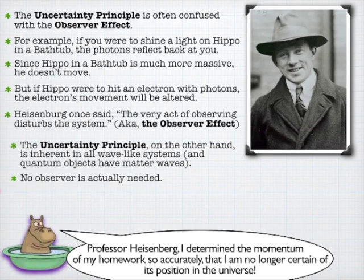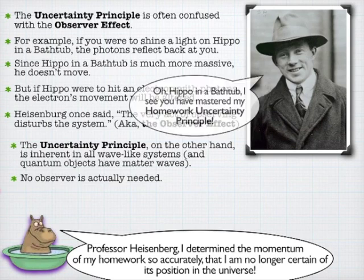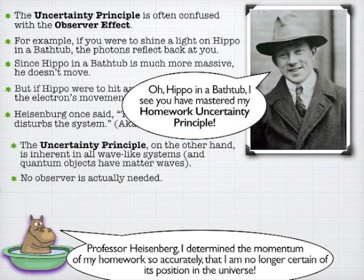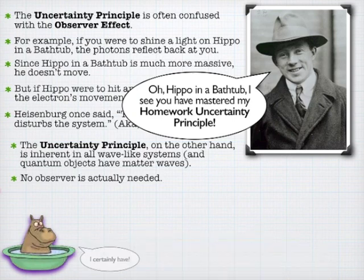You can certainly invoke Heisenberg's homework uncertainty principle: you've determined the momentum of your homework so precisely that you are no longer certain of its location in the universe. Should get you out of at least one homework assignment.